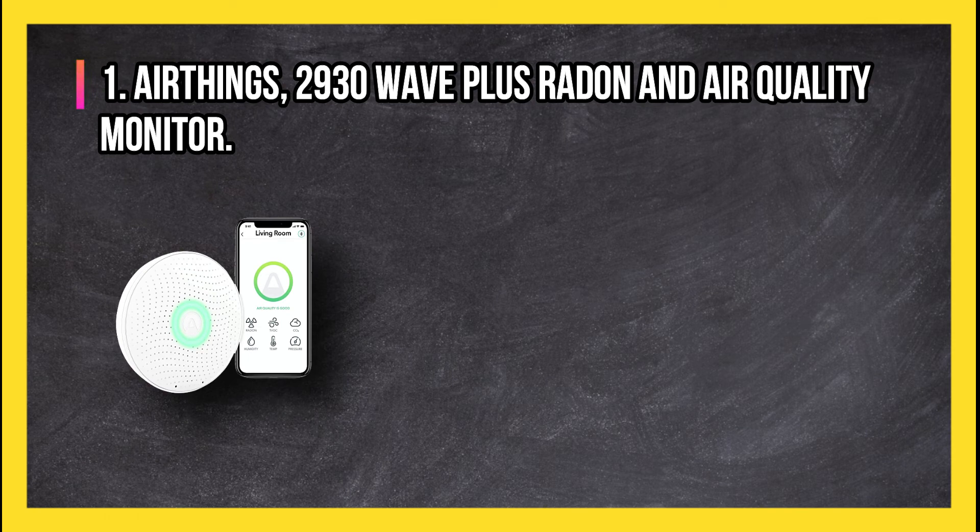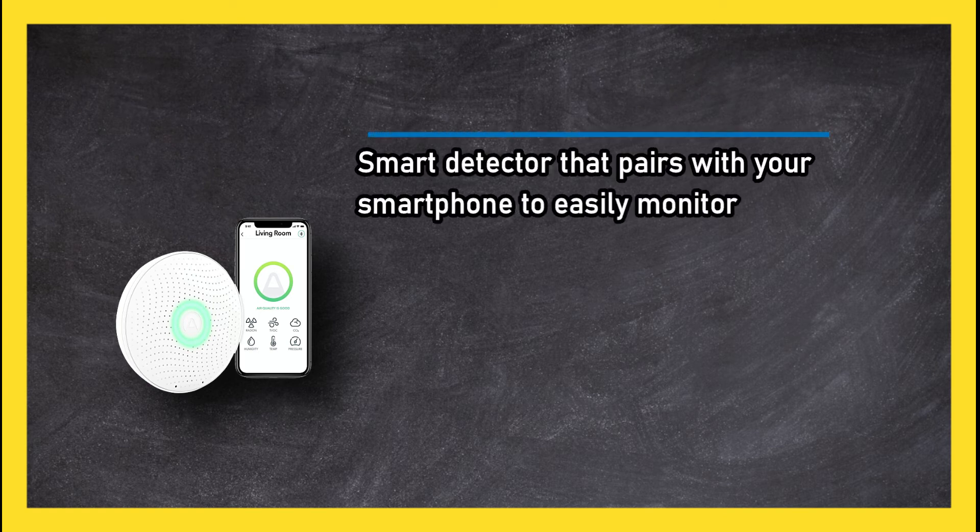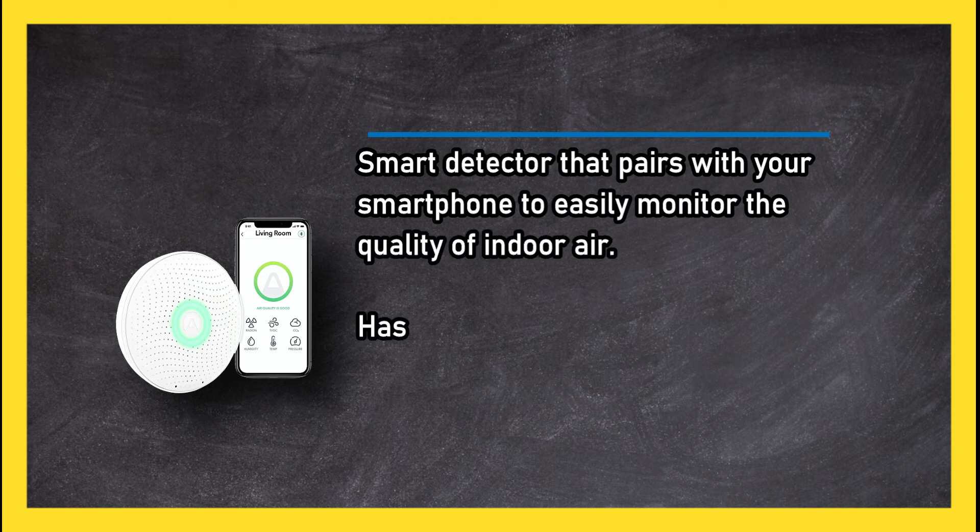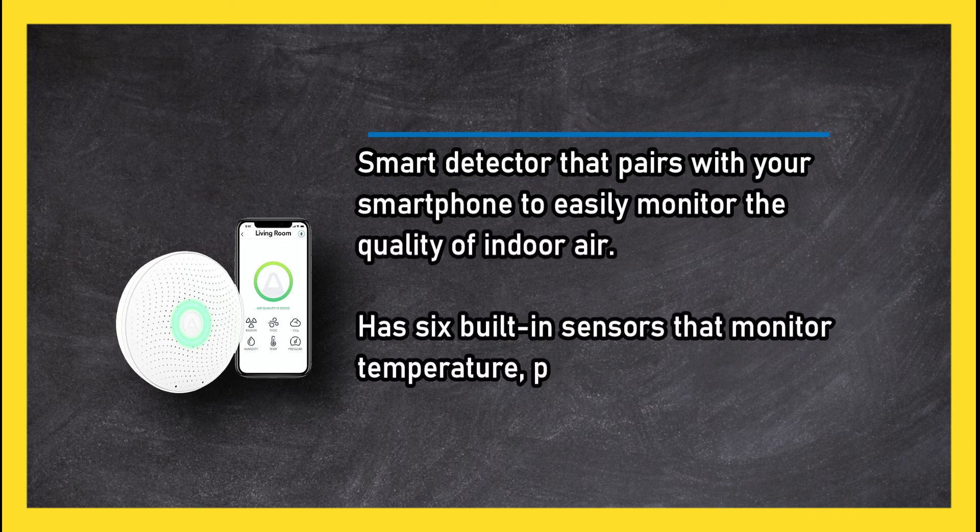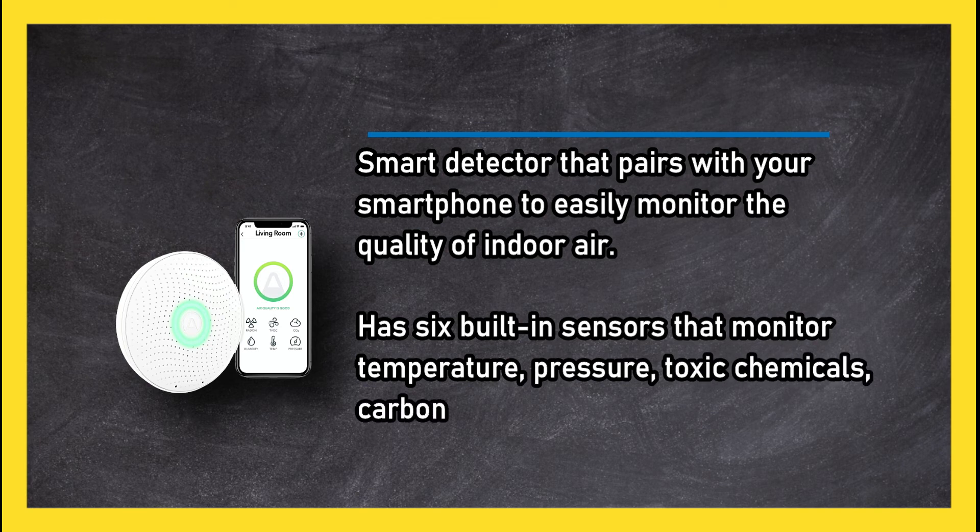At number one: Airthings 2930 Wave Plus Radon and Air Quality Monitor. Smart detector that pairs with your smartphone to easily monitor the quality of indoor air. Has six built-in sensors that monitor temperature, pressure, toxic chemicals, carbon dioxide, and humidity levels in addition to radon.